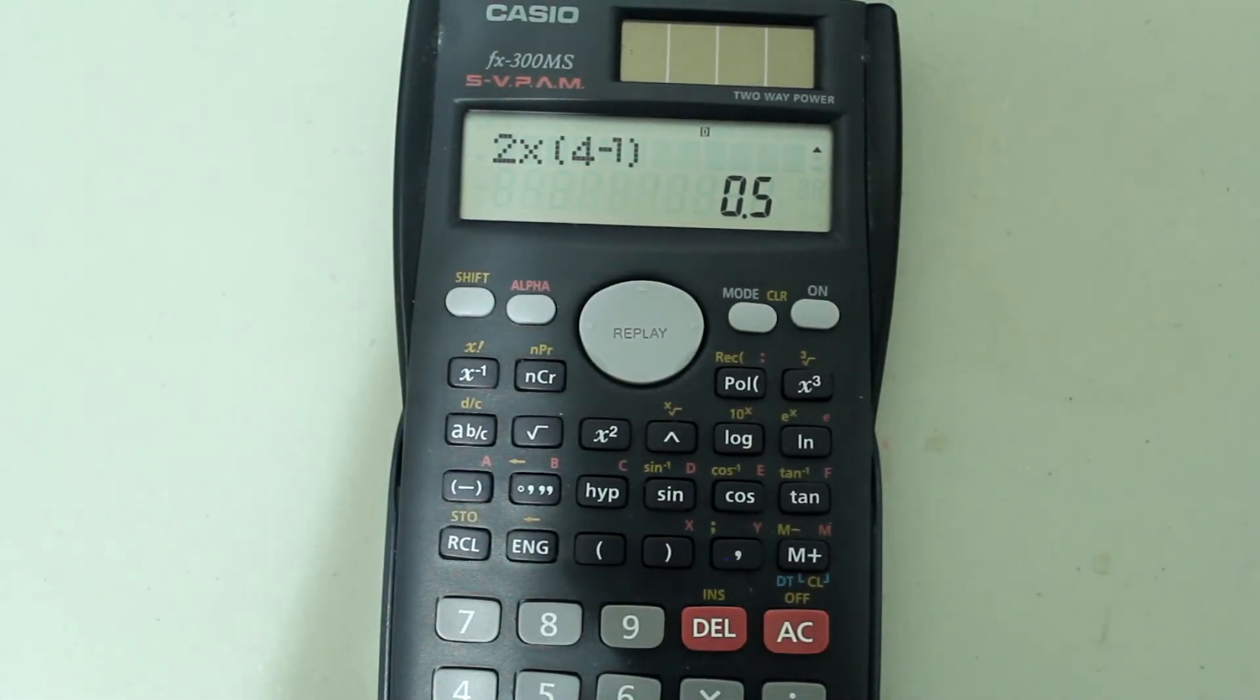And we know that the reciprocal of 4 is 0.25. So, 2 times 0.25 should give us 0.5. And that's what the calculator gives us.